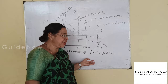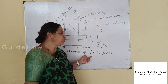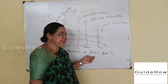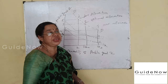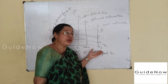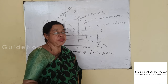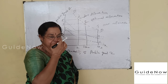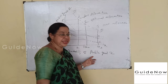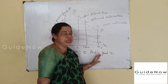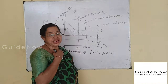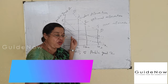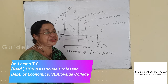The voluntary exchange theory is explained with the help of a figure. In the graph, the OX axis represents the quantity of public good Z, and the OY axis represents the price or cost of the public good. In the voluntary exchange model, there are three individual buyers — also called individual consumers or taxpayers — named A, B, and C.